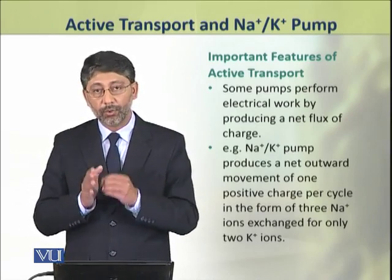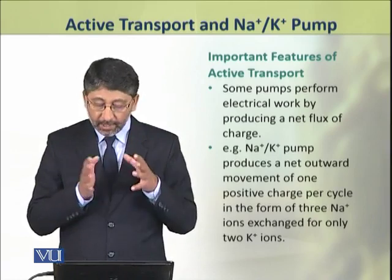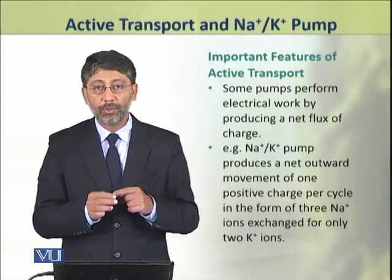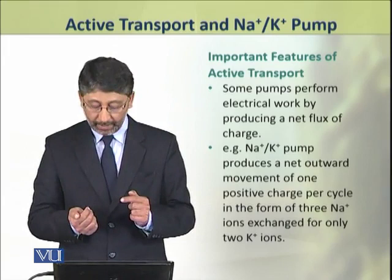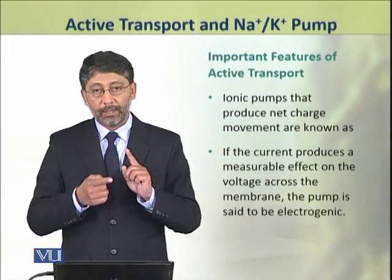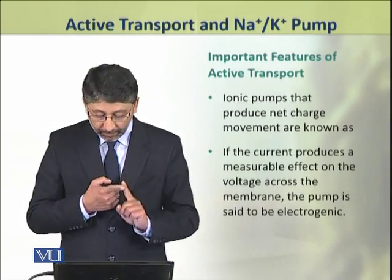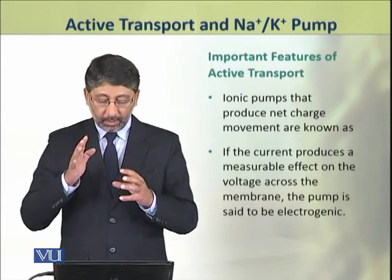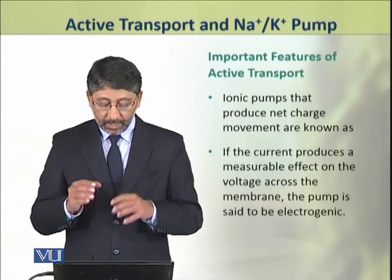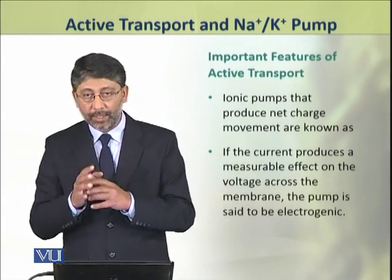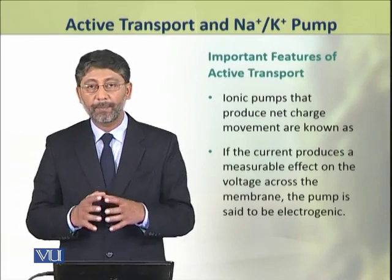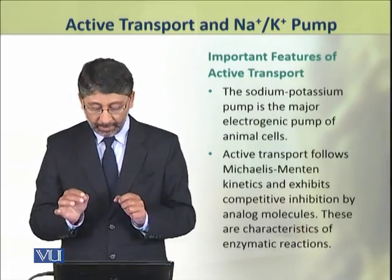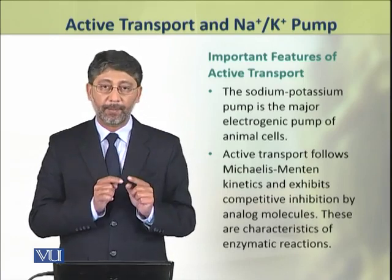For example, the sodium-potassium pump produces a net outward movement of one positive charge in each cycle, in the form of three sodium ions moving outside and two potassium ions moving inside. Ion pumps which produce net charge movement are known as rheogenic pumps. If the current produces a measurable effect on the voltage across the membrane, the pump is known as electrogenic. In this way, the sodium-potassium pump is the major electrogenic pump of the cell.